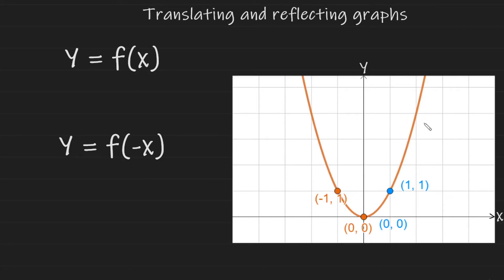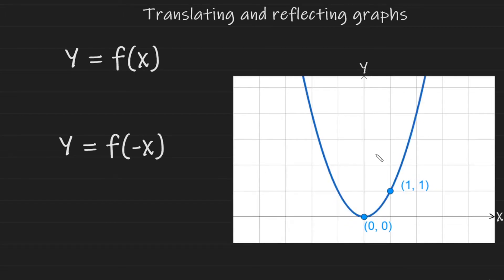Because this quadratic graph is symmetrical, the reflection looks the same as the original graph. Think about it. Look at the original again. If I reflect or flip it around the y-axis, it would still look the same.